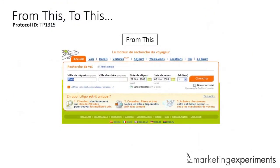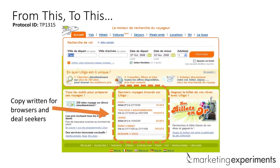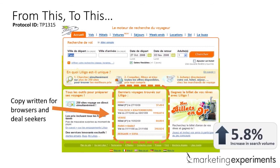Remember the French flight site page? Let's take a look at the winning treatment. Notice it had three sections — written for deal seekers and browsers, like flights you could get tomorrow at a discount, plus two other columns for value proposition and special offers. Just having a section for those people, even though it was evenly weighted on the page, resulted in a significant difference in search volume.